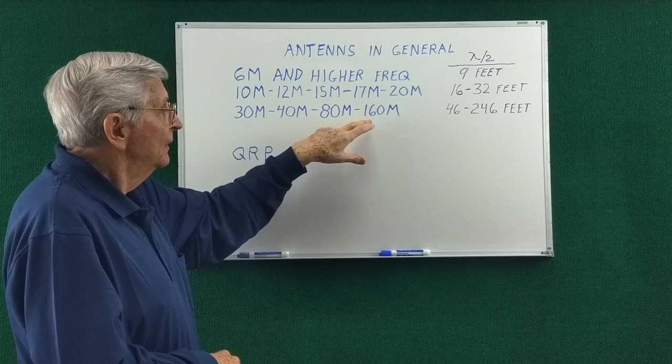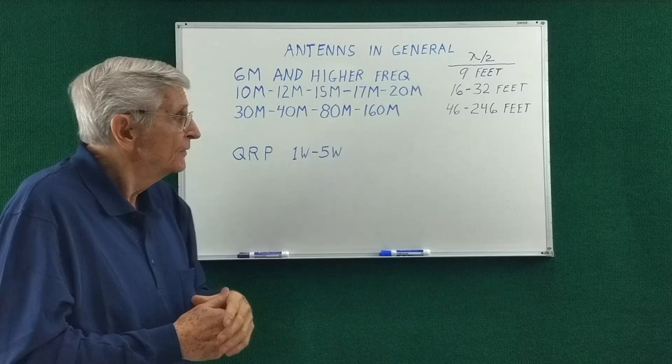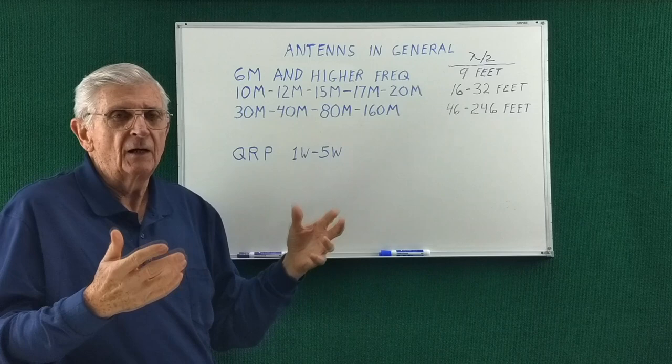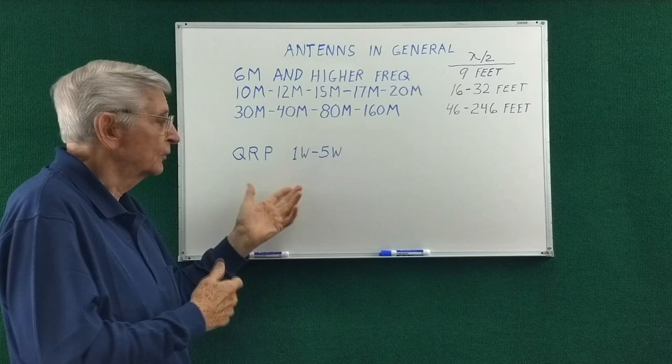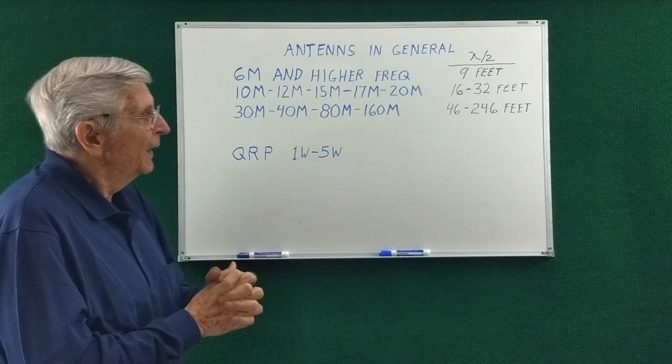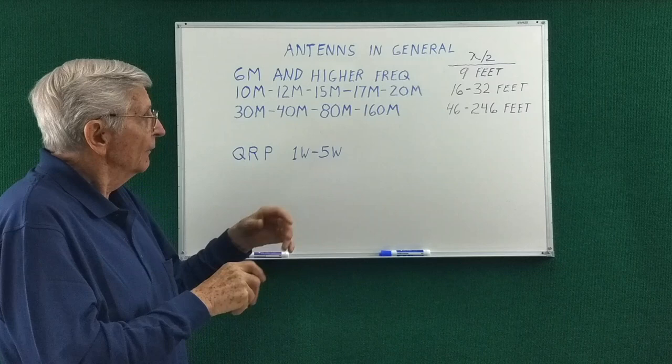Now I managed to work a station in Switzerland with my 160 meter dipole, and my antenna is only about 50 feet high. So antennas will work even when they are not optimum in design. Even QRP people with very low wattages make contacts. So even in non-optimum conditions, contacts can be made.